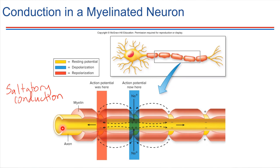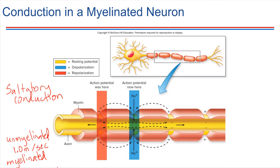So diameter of the neuron, and then also myelination. If you have a neuron that is unmyelinated — so it doesn't have the myelin sheath — signal propagation is about one meter per second. But if we have a nice myelinated axon instead, the speed is way faster, about 100 meters per second. So very big difference in terms of speed: one meter versus 100 meters. Much quicker to have a myelinated axon in terms of signal propagation.